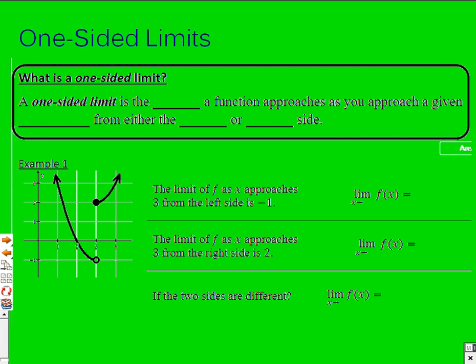We looked at this idea in the last video about what a one-sided limit is. The one-sided limit is just like a regular limit — it is the y value that the function approaches as you approach a given x value. The difference is that for a one-sided limit, we're approaching from either the left side or the right side.